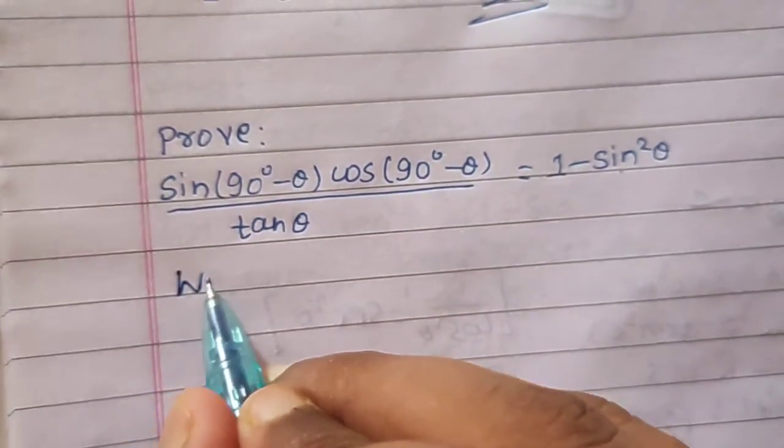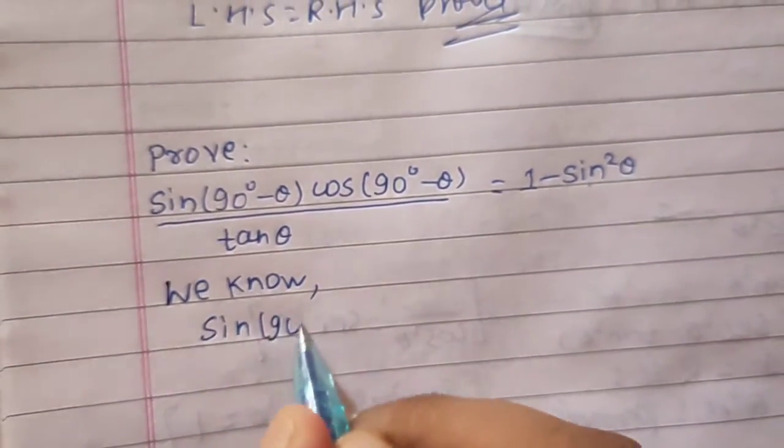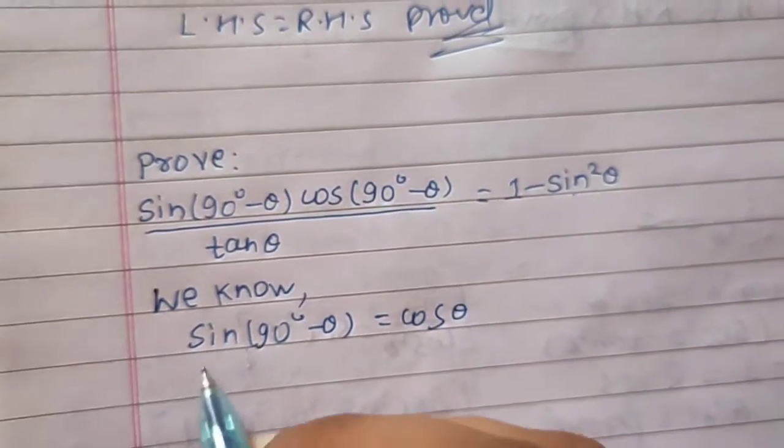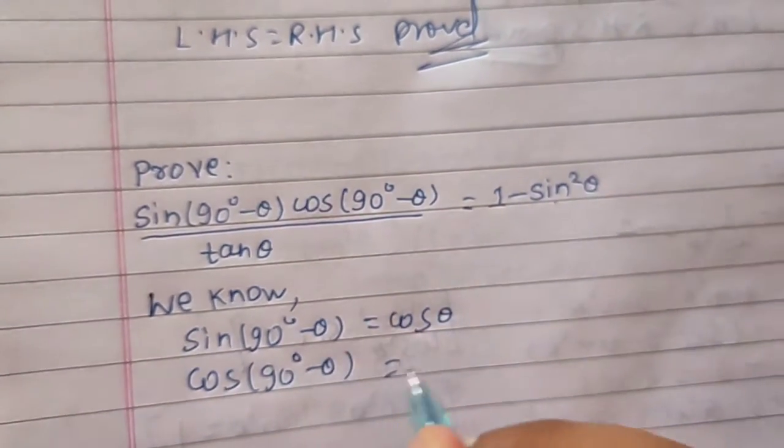First, we know that sin(90° - θ) = cos θ and cos(90° - θ) = sin θ.